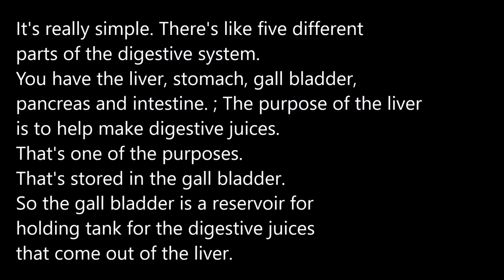It's really simple. There are five different parts of the digestive system. You have the liver, stomach, gallbladder, pancreas, and intestines. The purpose of the liver is to help make digestive juices — that's one of its purposes — and those are stored in the gallbladder. So the gallbladder is a reservoir, a holding tank, for the digestive juices that come out of the liver.